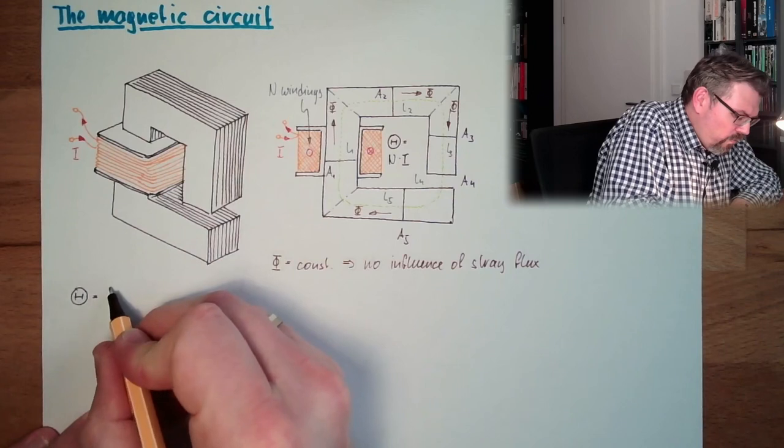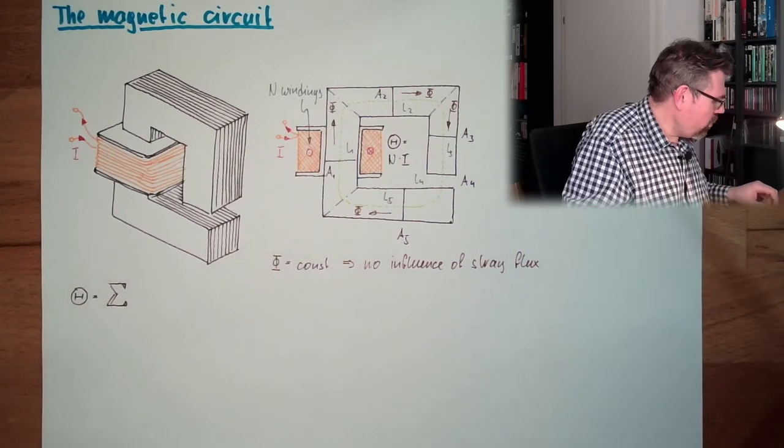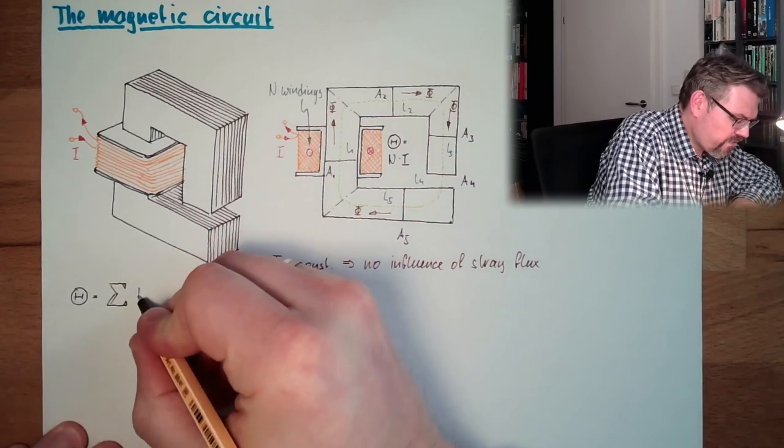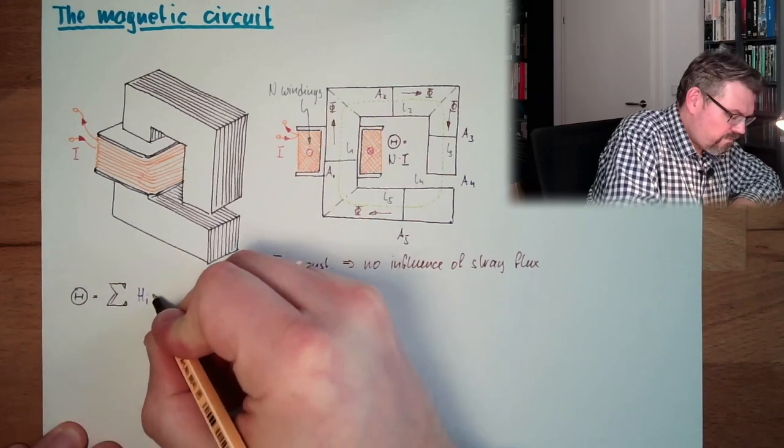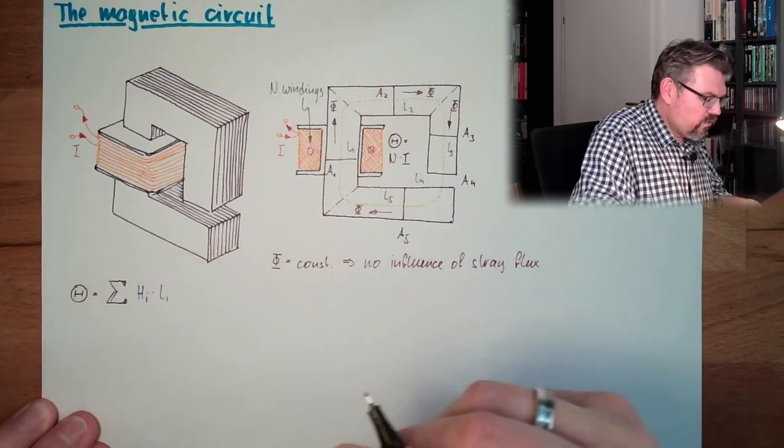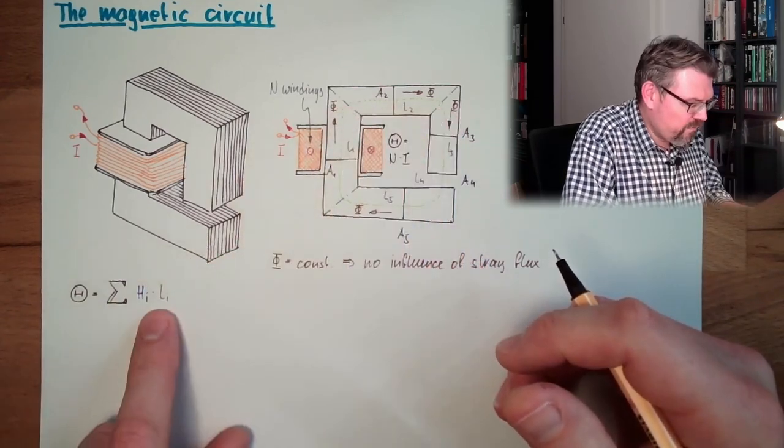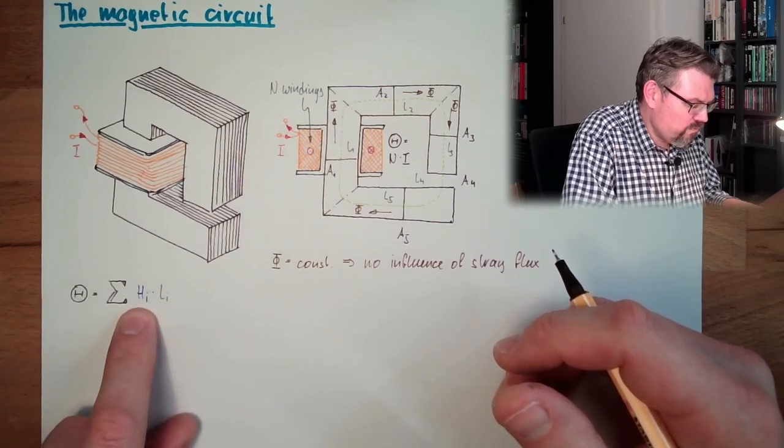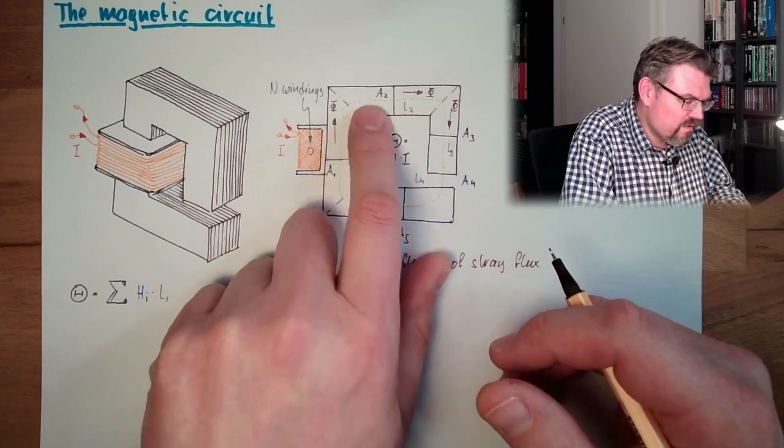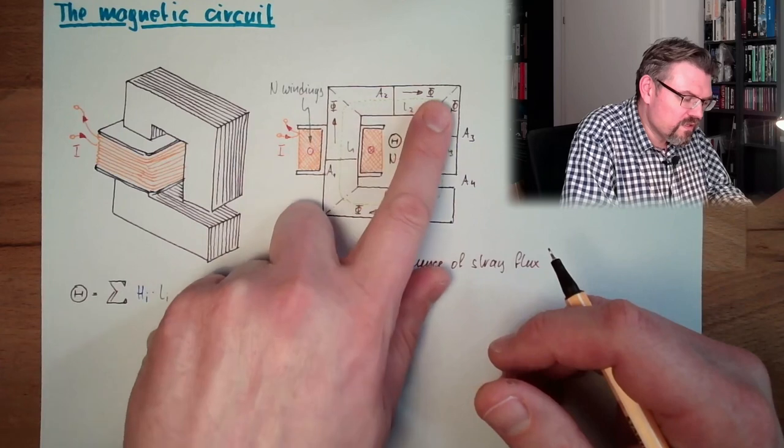The durchflutung equals the sum of all magnetic field strength multiplied by the length of this area.